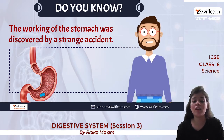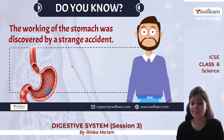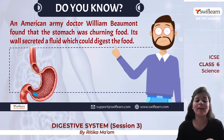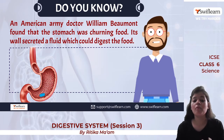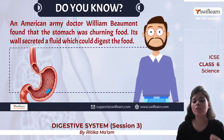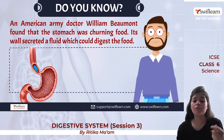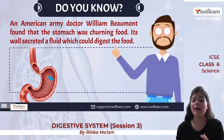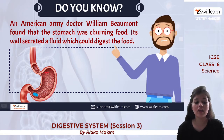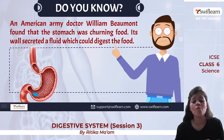There is an interesting story about how the stomach's function was discovered through a strange accident by an American army doctor, William Beaumont. He found that the stomach was churning the food and its walls were secreting a fluid that helped to digest the food.